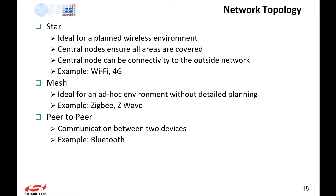Network topology is another differentiator between wireless protocols. Star networks — Wi-Fi and cellular (3G/4G/5G) — are ideal for planned environments with a defined central node. Mesh networks — ZigBee, Z-Wave, and Thread — work well in homes and industrial environments where detailed planning isn't feasible; devices self-organize and route data to an edge node. Peer-to-peer networks like Bluetooth connect just two devices directly.